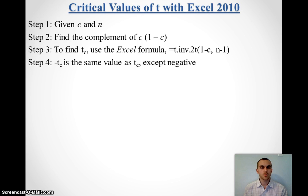And then we're going to plug all of our information into Excel in this t.inv.2t. And it's 2t for two tails, so that we don't have to actually calculate one tail and then figure out the other. And it uses the complement of the confidence interval and the degrees of freedom, sample size minus 1. And this gives us the positive critical value.